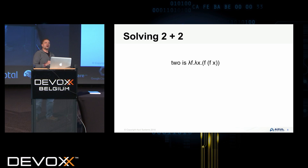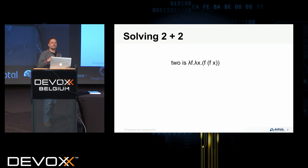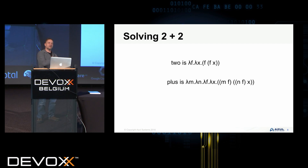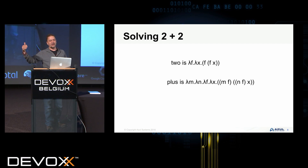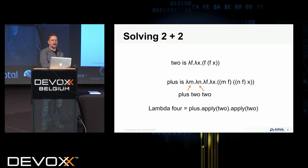So if we look at 2 plus 2: we know that 2 as a Lambda expression is represented by lambda f, lambda x, and then applying function f twice on value x. Plus as a Lambda expression is represented by m, n — the values to add — with f and x, and then m of f, n of f applied to x. Using Polish notation, that's plus 2 2. As a Lambda expression call: lambda four equals plus dot apply 2 dot apply 2, which will apply the Lambda expression and generate the result.